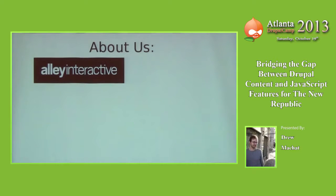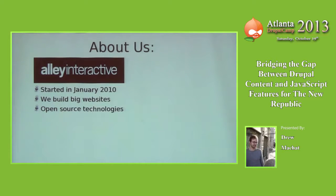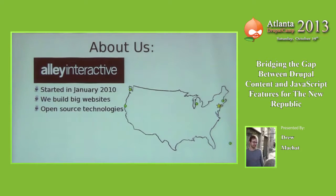Let's start with Ali Interactive. The company started in January of 2010. The first client was the New York Observer, which has kind of been the pattern since — we work with big websites and mostly big media websites. We use open source technology. We started with Drupal, but at this point the majority of our client work is actually done in WordPress. We also use Django, Rails, and we have a few apps built with Node.js and Go. We're headquartered in New York City, but several of us work remotely all over the country, some internationally.